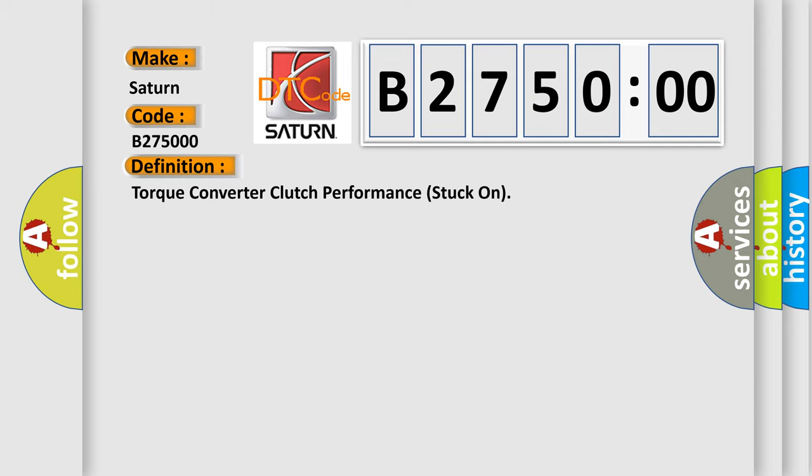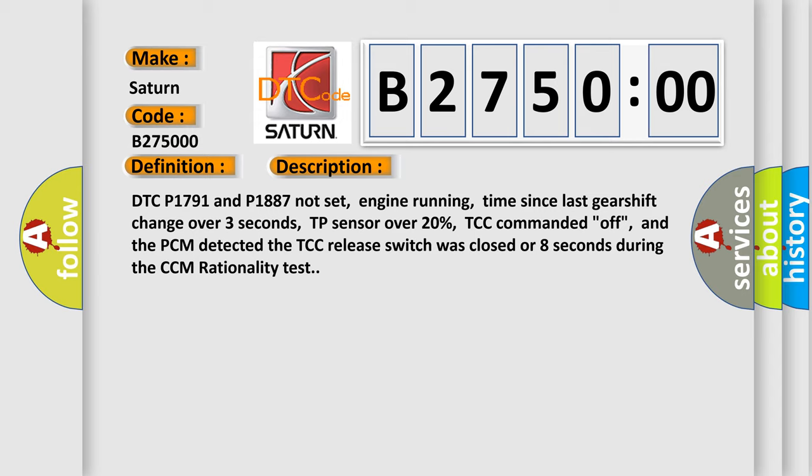And now this is a short description of this DTC code. DTC P1791 and P1887 not set, engine running, time since last gearshift change over 3 seconds, TP sensor over 20%, TCC commanded off, and the PCM detected the TCC release switch was closed for 8 seconds during the CCM rationality test.